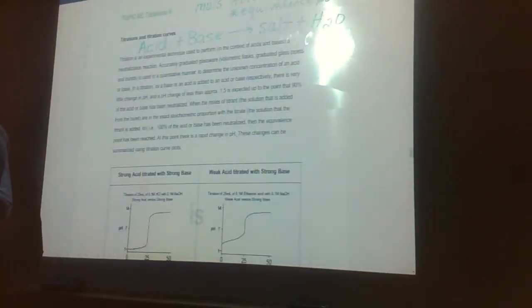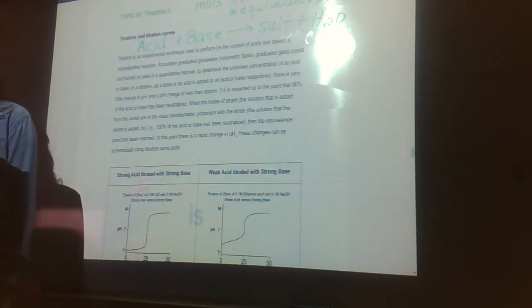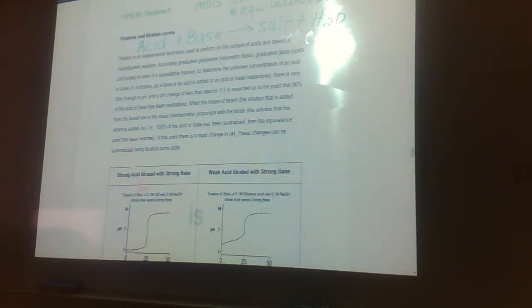And that's where we reach what we call the equivalence point, because they're equivalent. And at that point, we see a rapid change in pH. We're going to look at some graphs and discuss these graphs in just a second. It's going to be stoichiometry. We're going to be looking at moles of acid and moles of base and when those are equal and what happens to the pH at that point.